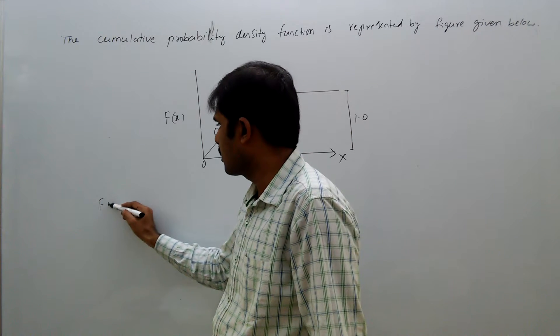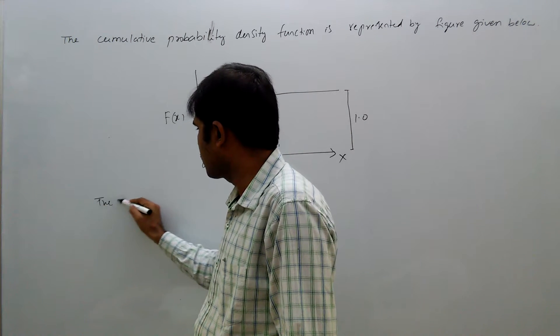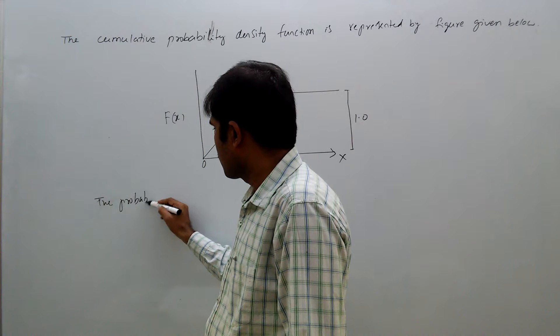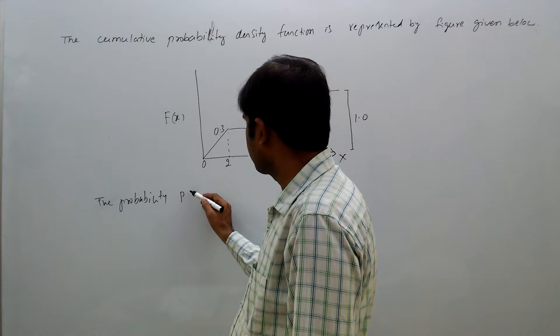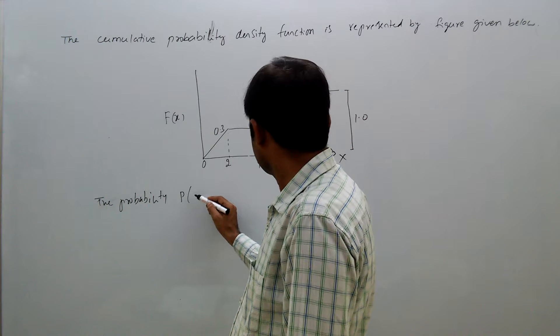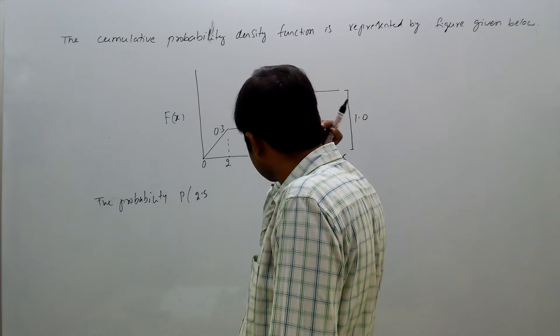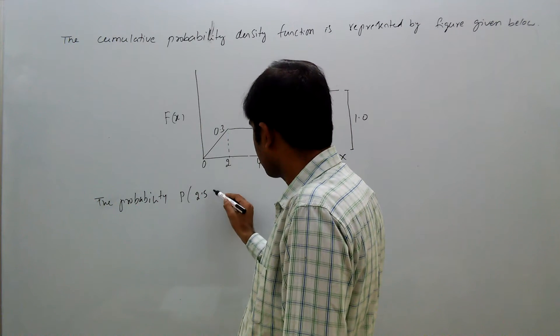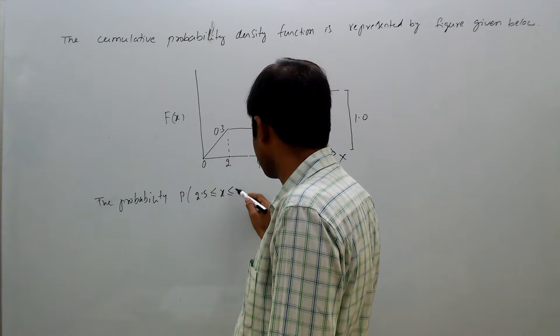Find the probability P of 2.5 less than or equal to x less than or equal to 4.5.